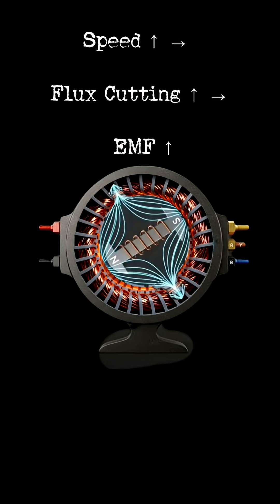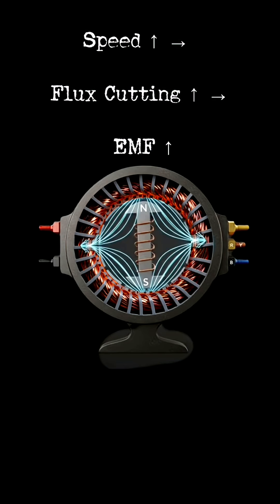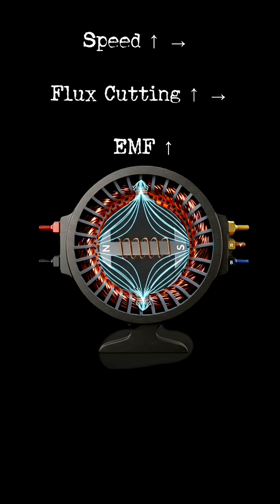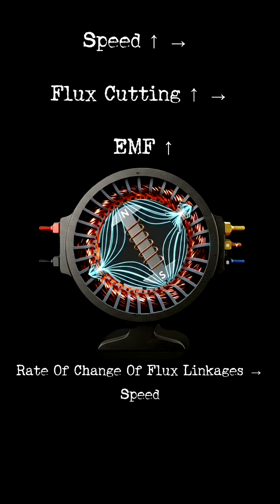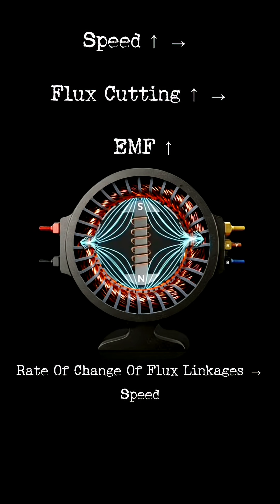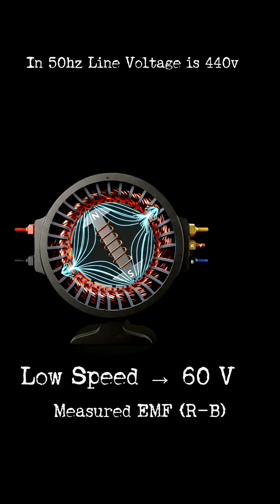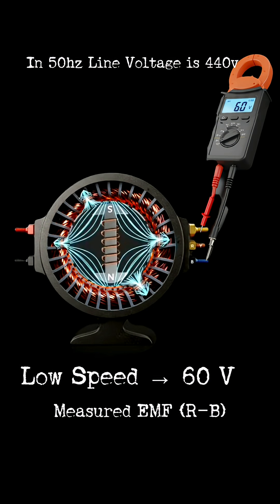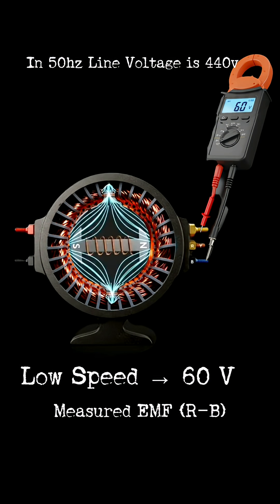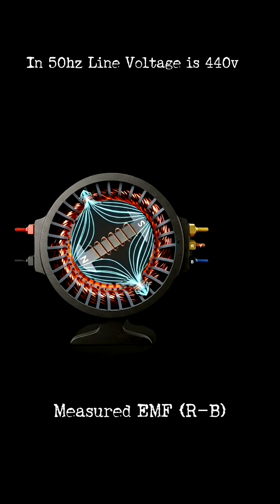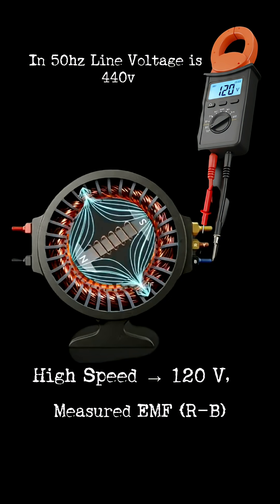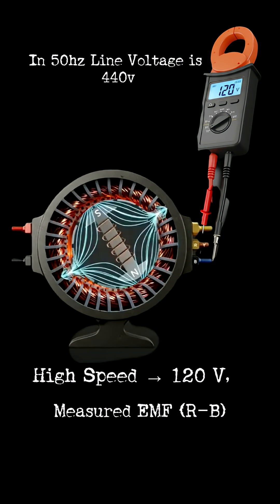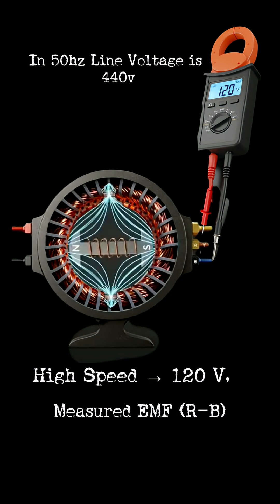The induced EMF depends on the rate of change of flux linkages — in simple terms, speed. This can be measured directly: at lower speed, the clamp meter shows about 60 volts. Increasing the speed, the reading climbs above 120 volts. The faster the speed, the higher the induced EMF.